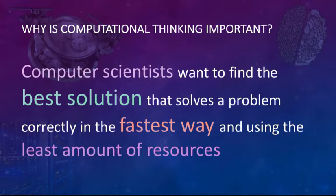So why is computational thinking important? Well, it's because computer scientists want to find the best solution that solves a problem correctly in the fastest way and using the least amount of resources. Now most computing problems the fastest way is the least resources, but there are exceptions and other reasons why you might want to do it in a slightly different way. But apart from solving world hunger, there are many other problems you could solve by thinking in a computational way.